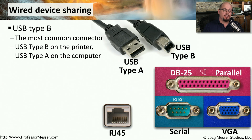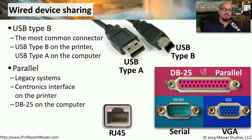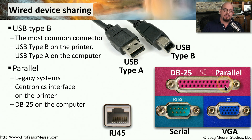If we're connecting to one of these multi-function devices with a cable, we're usually using a USB connection. One of the most common USB types on these multi-function devices is a Type B connector on the printer, while you often see the normal USB Type A connector that plugs into the computer. If this is an older multi-function device or printer, it may not be using USB — it may be using the older parallel connection, commonly referred to as a DB25 or parallel connection. You'll see the DB25 connector on your computer.